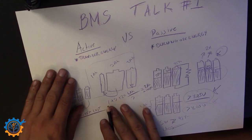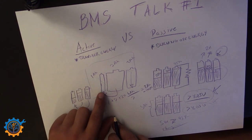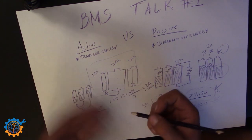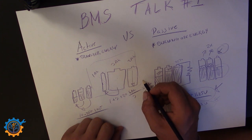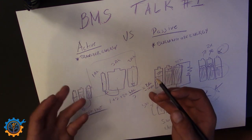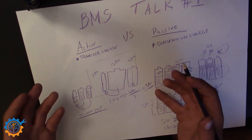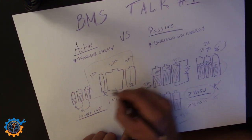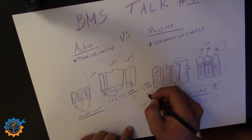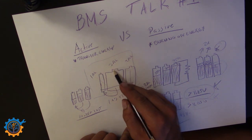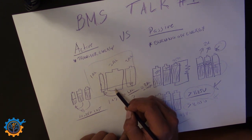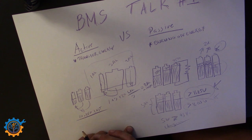Meanwhile, some active balancers are constantly moving energy around the packs. If you are around 70% state of charge, do you need to balance at that point? I only consider you need active balancing when you are at the bottom of state of charge, and that is to move energy from one cell to another to extend the range. That's when active balancing is actually useful.